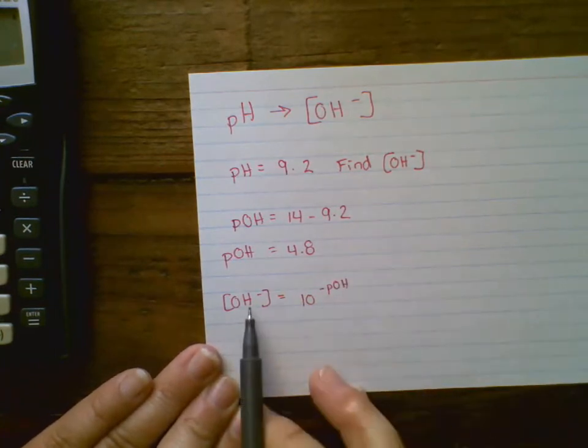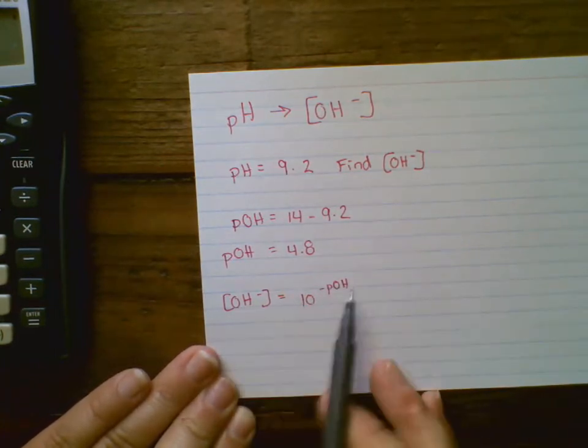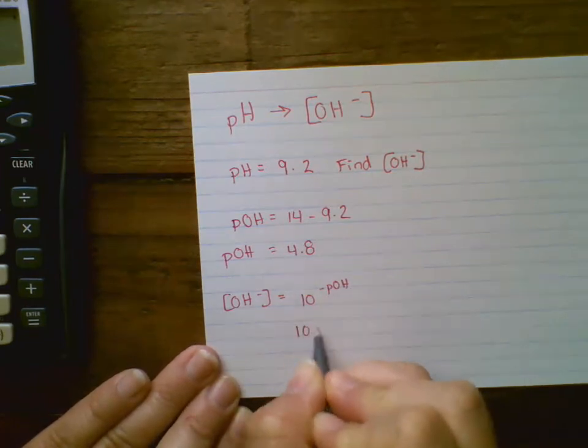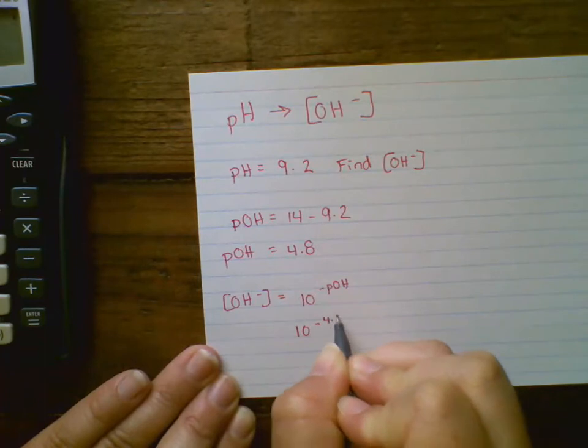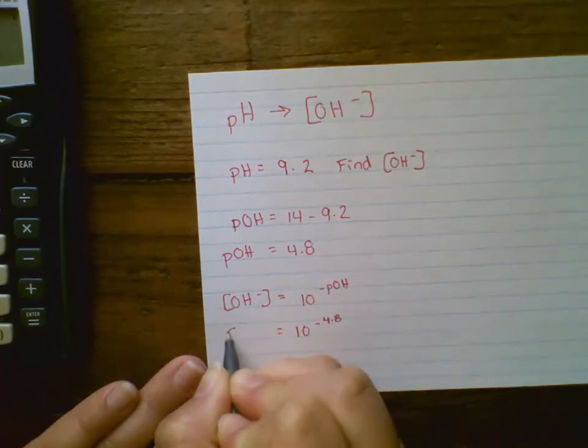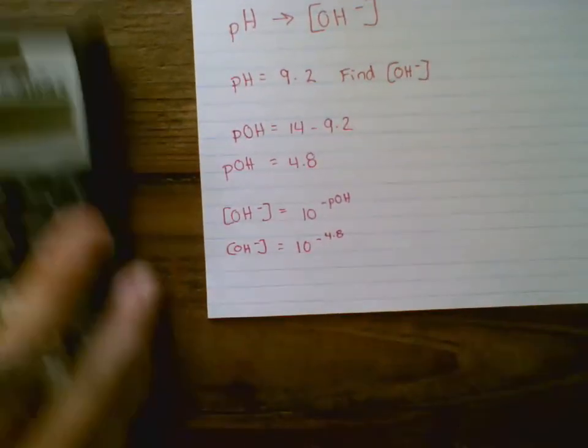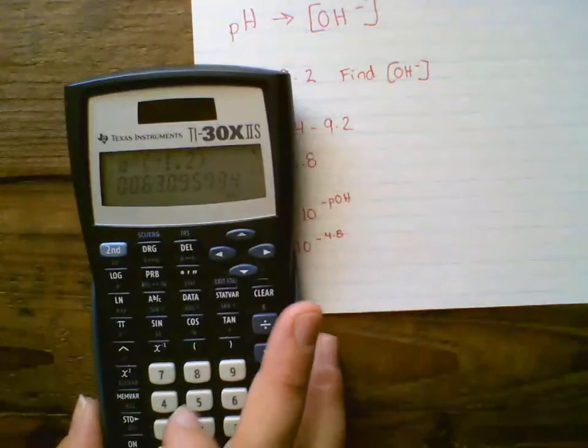Again, pOH, I can only use this step if these two match up. So I'm going to take 10 to the negative 4.8. I can't do this one in mental math, so I'm going to use my calculator.